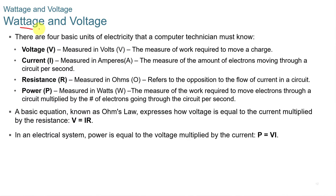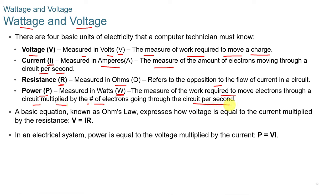Electrical power: wattage and voltage are two things you need to know for this course and for CompTIA. Voltage, measured in volts (V), is the measure of work required to move a charge. Current, represented by I, is measured in amperes — the measure of electrons moving through a circuit per second. Resistance, measured in ohms, refers to the opposition to current flow in a circuit. Power, represented by P, is measured in watts. Ohm's Law states V equals IR. In an electrical system, power equals voltage multiplied by current: P equals VI.